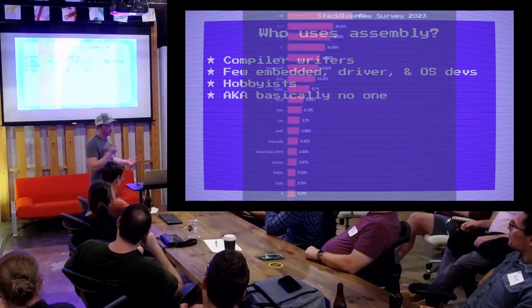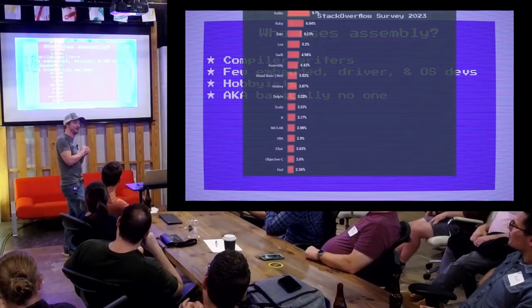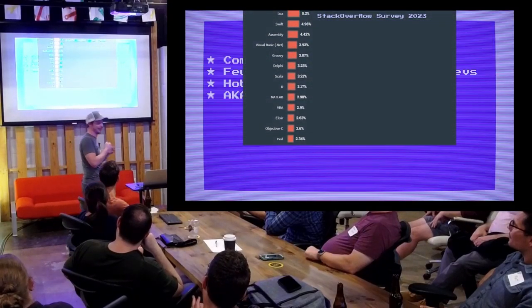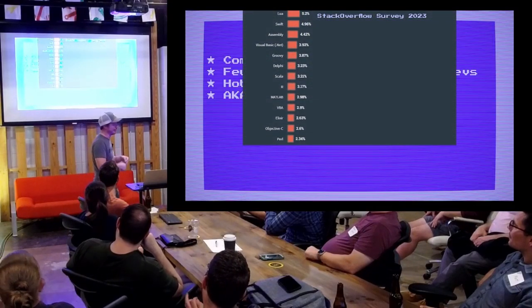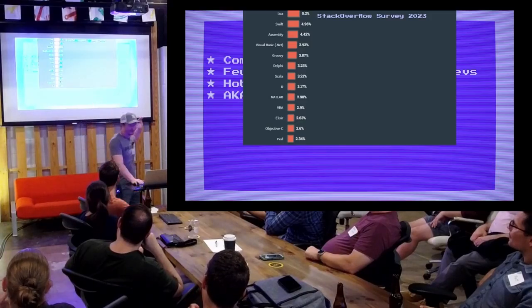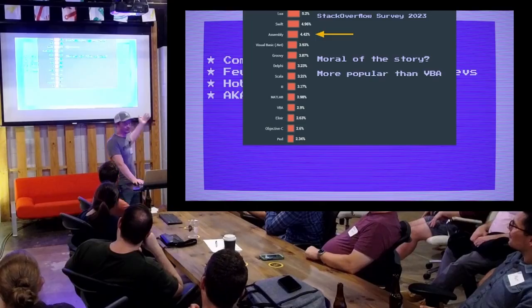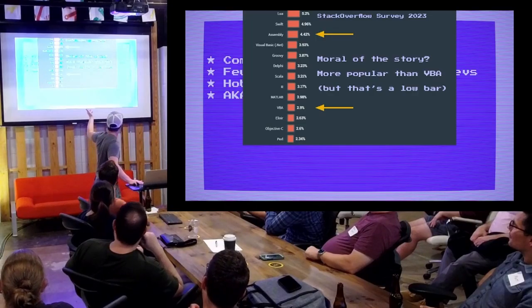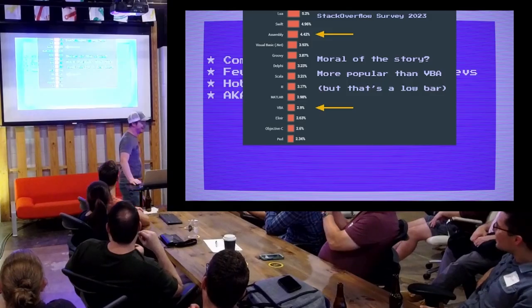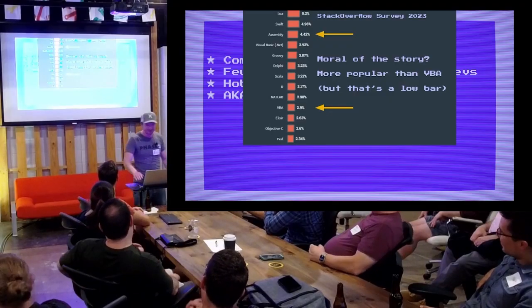I looked at the Stack Overflow survey from last year on the most popular languages, and assembly sits at 4.42% — pretty low on the list. But the moral of the story is that it's still more popular than VBA, though that's a low bar.